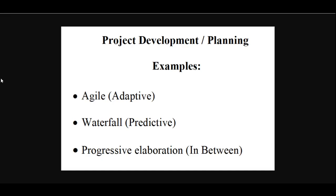Here are some method examples for development planning. Agile development methods lie on the adaptive side of the continuum. Waterfall development methods lie on the predictive side. Progressive Elaboration development methods lie in between.